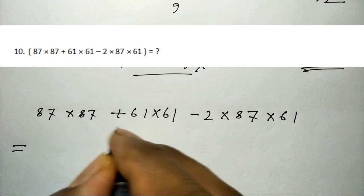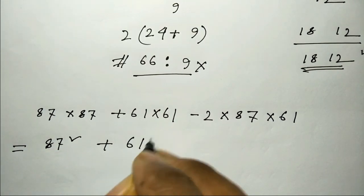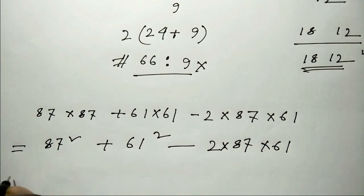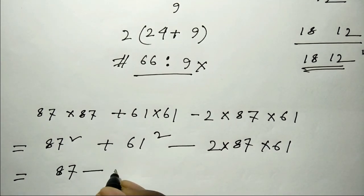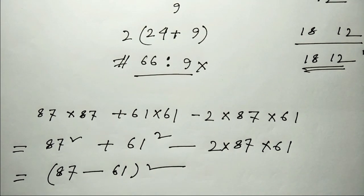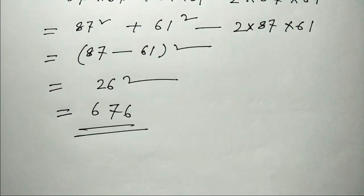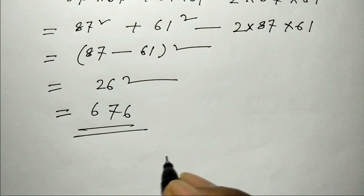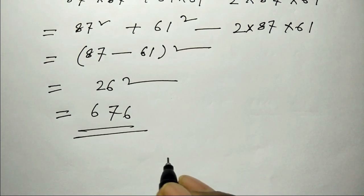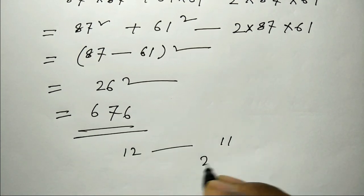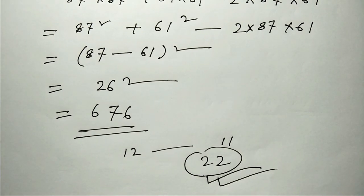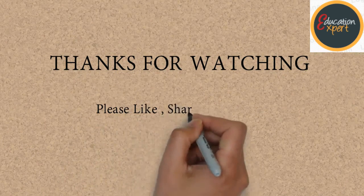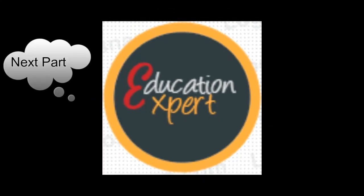Next question: how many times in a day do the hands of a clock form a straight line? The hands of a clock form a straight line — going over the clock, the hands form a straight line. The answer is 22. Next question.